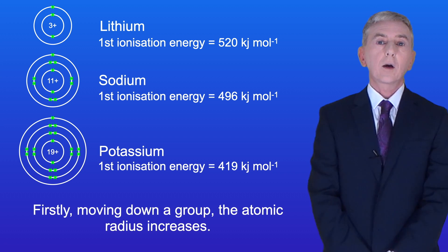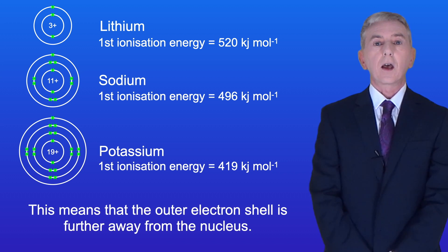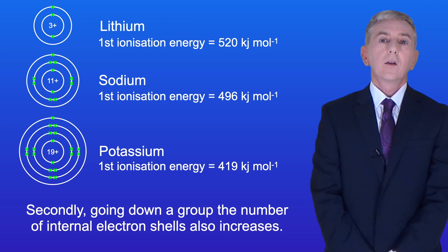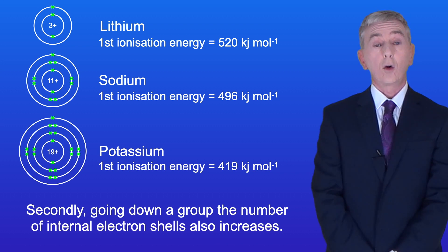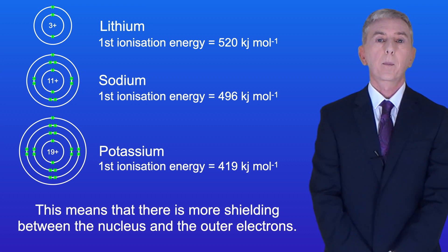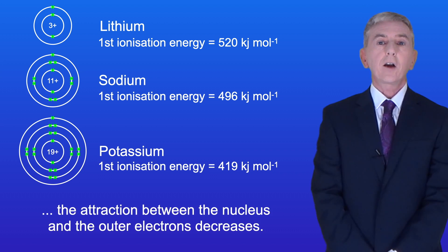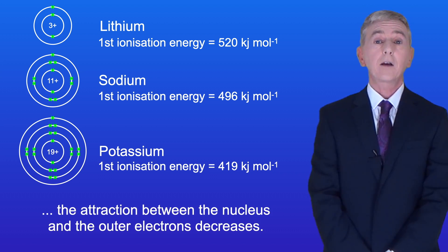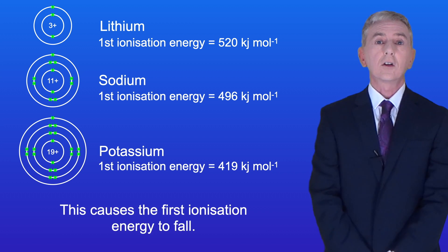Firstly, moving down a group, the atomic radius increases. This means that the outer electron shell is further away from the nucleus. Secondly, going down a group, the number of internal electron shells also increases. This means that there's more shielding between the nucleus and the outer electrons. Both of these factors mean that going down a group, the attraction between the nucleus and the outer electrons decreases, which causes the first ionization energy to fall.